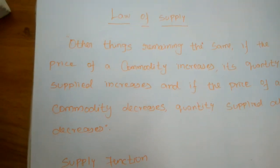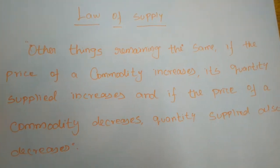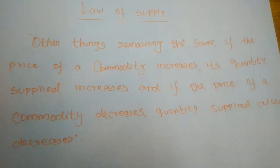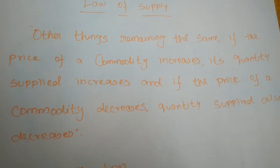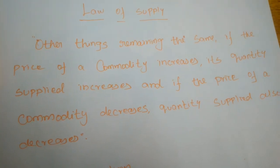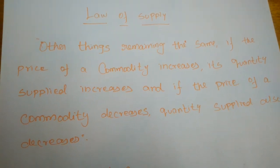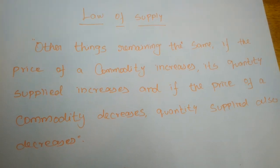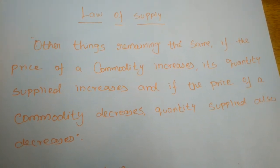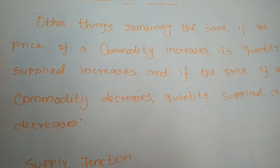Next is the law of supply. Just as we studied the law of demand, the law of supply refers to the direct relationship between the price of a good and the supply of that good. In the law of demand, there was an inverse relationship between price and the quantity demanded. But in the law of supply, there is a direct relationship between price and commodity supply. The law of supply is associated with the production analysis.